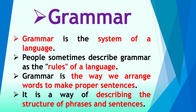The first point is: grammar is the system of a language. When we say system, it is very much related to science because scientific knowledge has a system, has certain patterns, can be proved, and can be verified. So grammar is the system of a language.